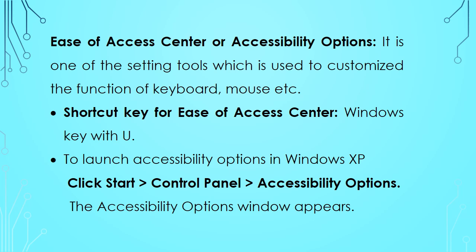Let us understand how to change the settings for disabled people. If you have Windows 7 or a newer operating system, then you will go with Ease of Access Center; otherwise in Windows XP, Accessibility Options helps to do so. As per the syllabus, the contents are based on Windows XP. The explanation of the video is XP-based, but I will show you both interfaces. The shortcut key for Ease of Access Center is Windows key + U.